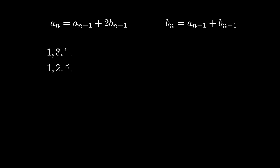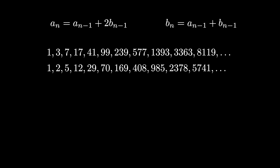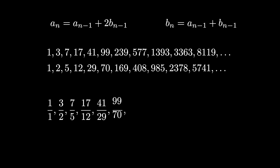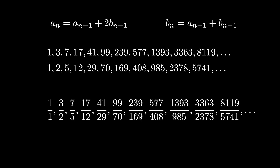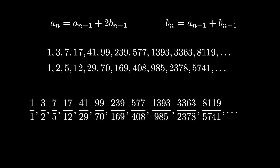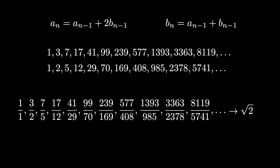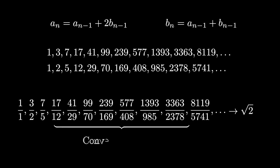If we start with a_1 = 1 and b_1 = 1, here are the two infinite sequences we get. The recurrence for a came from numerators, and the recurrence for b came from denominators. So if we take ratios of corresponding terms from a and b, we get an infinite list of rational numbers: 1/1, 3/2, 7/5, and so on. What's interesting is that each of these numbers gets closer and closer to the square root of 2 — this infinite sequence of rationals converges to √2. These rational numbers are known as the convergents of the square root of 2, and they give the best rational approximations to √2.